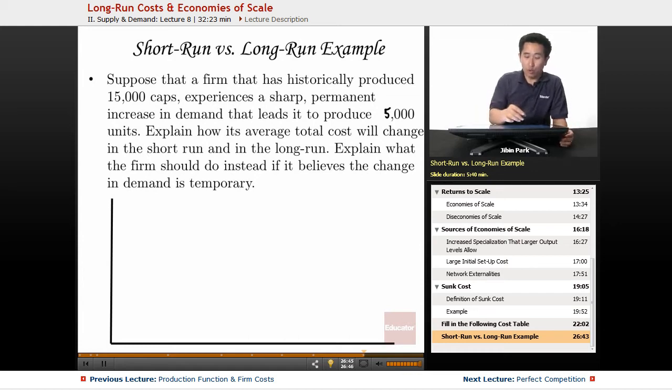So we're going to take a look at one short-run versus long-run example. Suppose that a firm has historically produced 15,000 caps, experiences a sharp permanent increase in demand that leads it to produce 25,000 units.